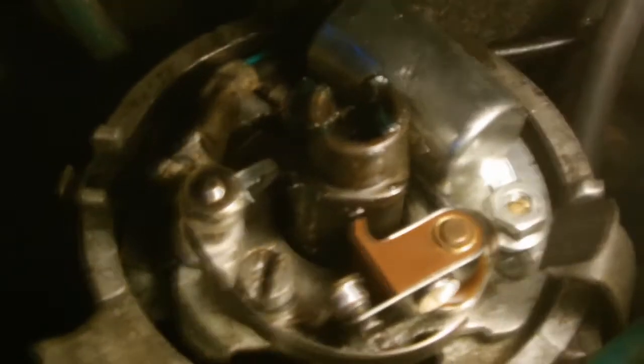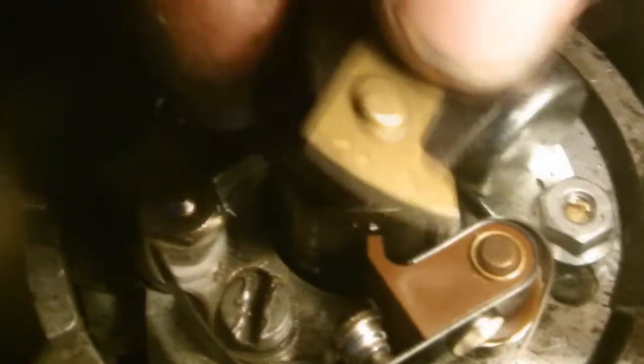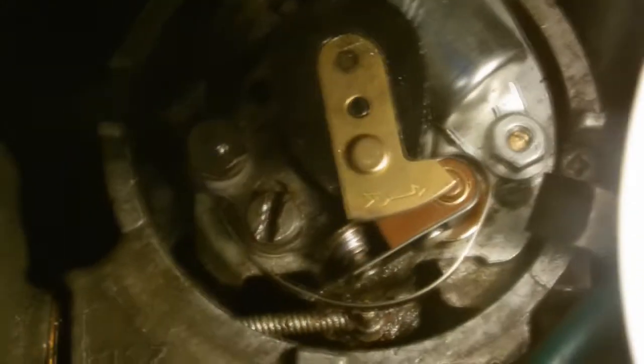And then we'll put on the rotor arm then. The little latches on the slot there. Push it all the way home. The next step is on the distributor cap. And then we'll fire it up.